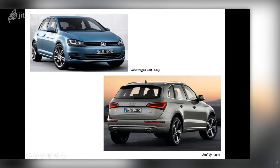Looking at the Volkswagen Golf, one single line divides the bumper from the body, divides the turn indicator from the headlights, and also forms part of the grille — one line with three different functions. The same approach appears on the Audi Q5 — one line divides the body from the bumper, defines the edge of the rear lamp, and also marks where the number plate light sits. Only one line, multiple functions.